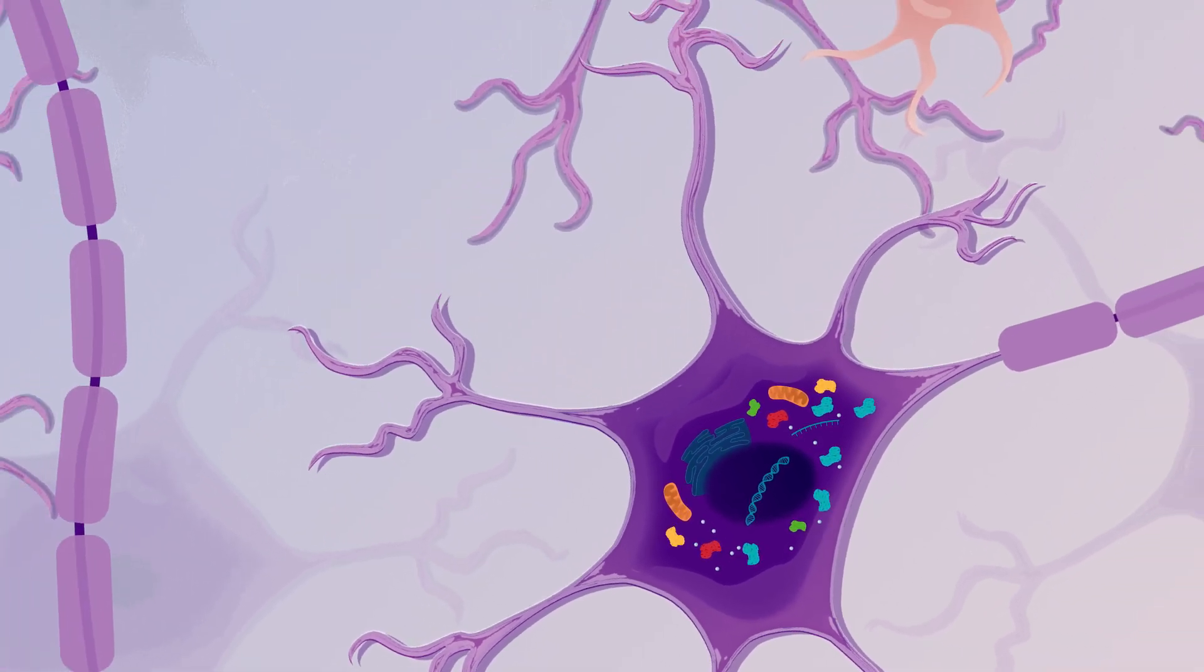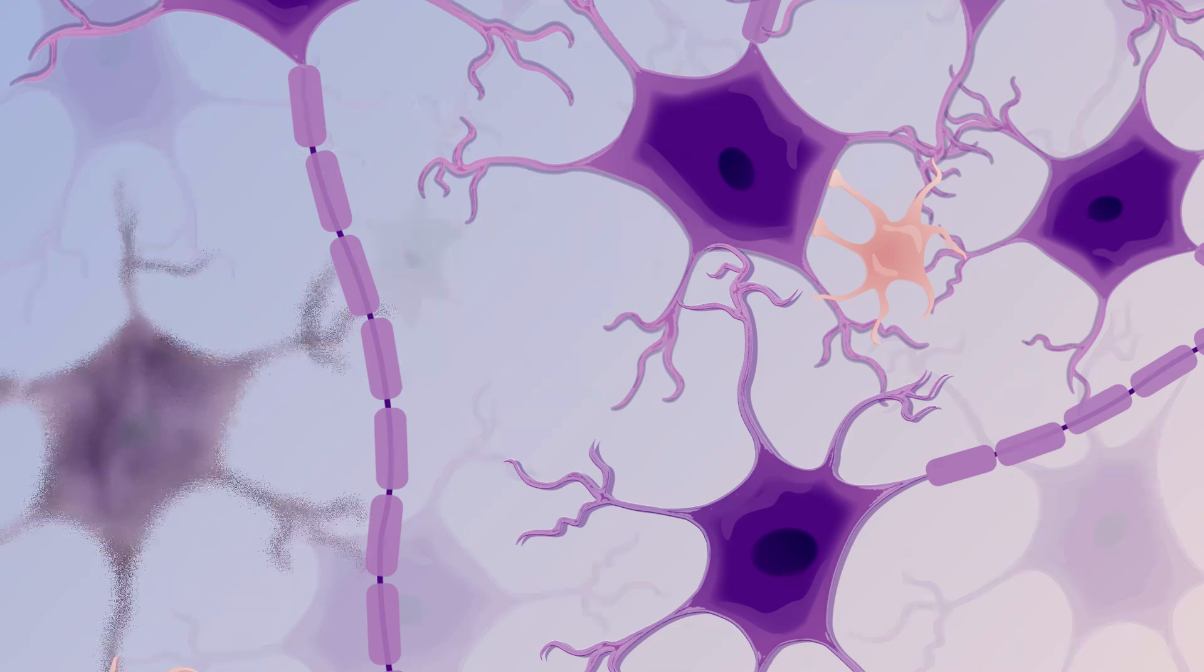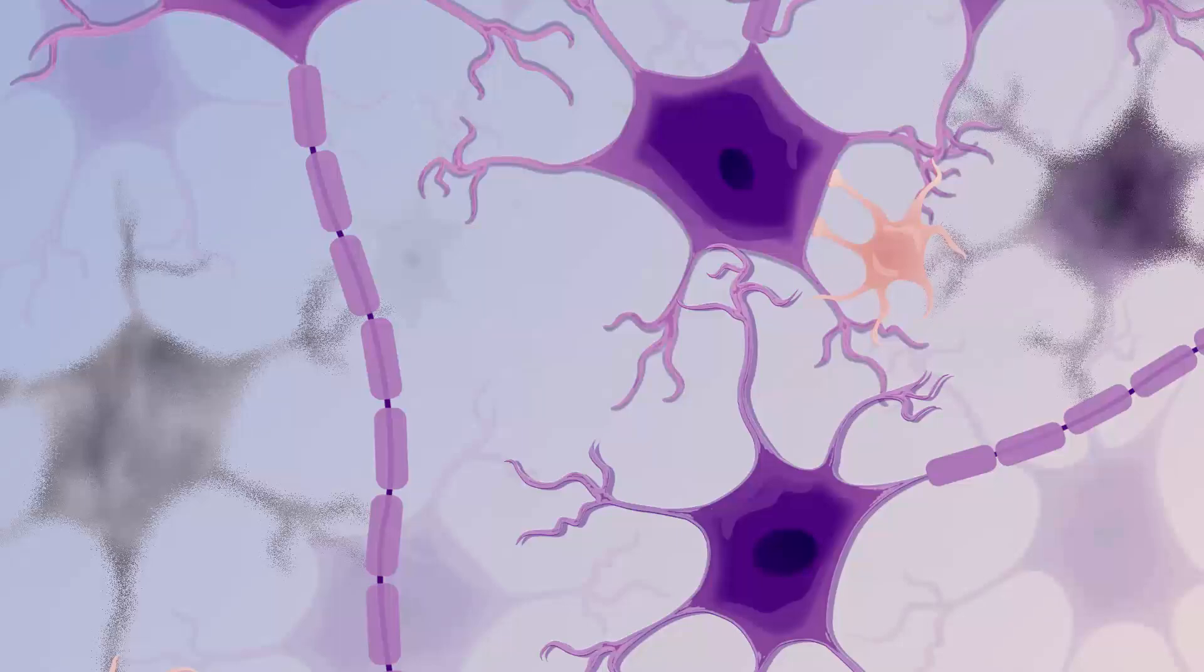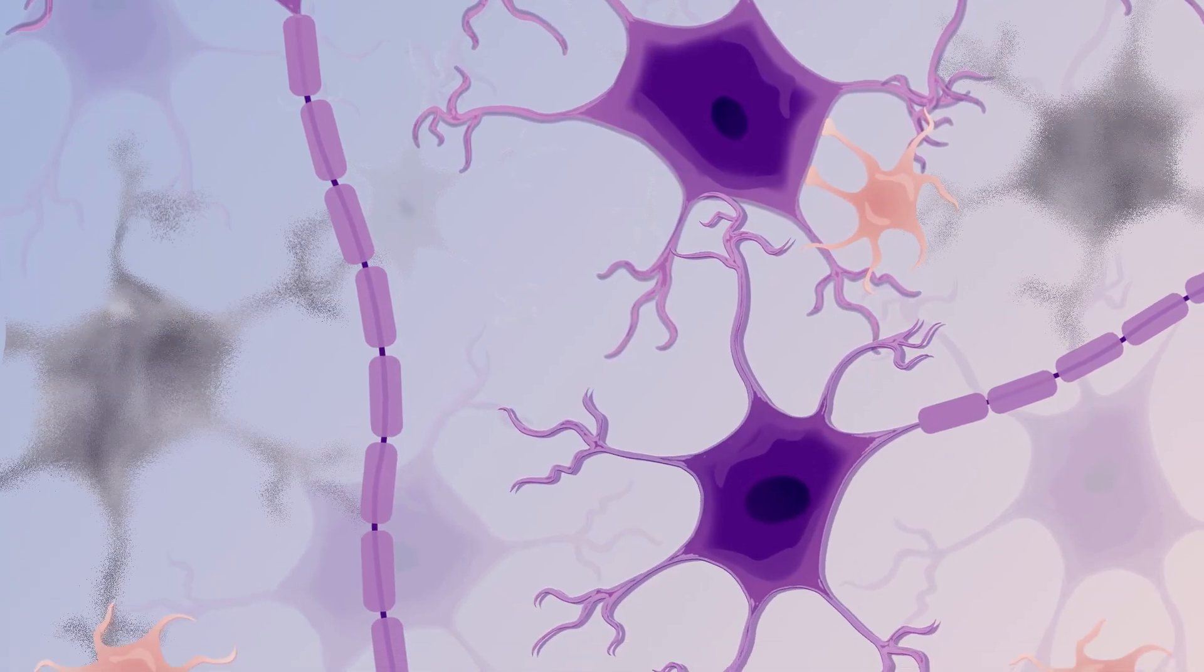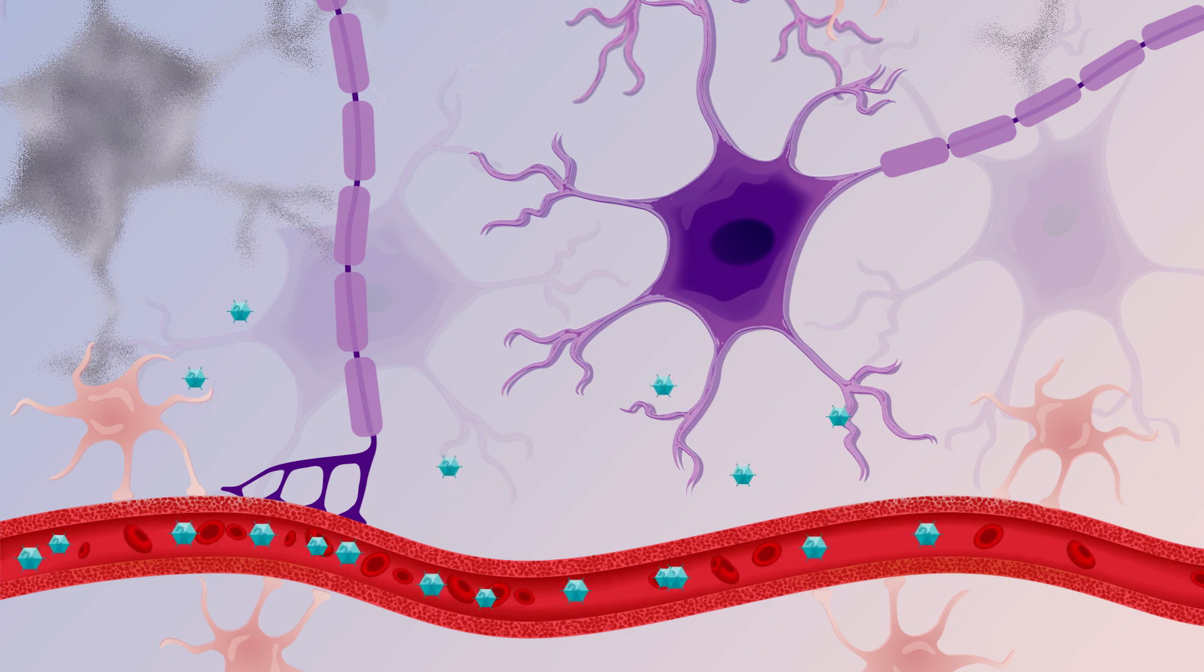Nerve cells that do not make good proteins will eventually die. When they die, the patient loses the ability to use his or her muscles. By delivering the healthy SMN1 gene to the cell before it dies, we can prevent the onset or stop the progression of SMA type 1 symptoms.